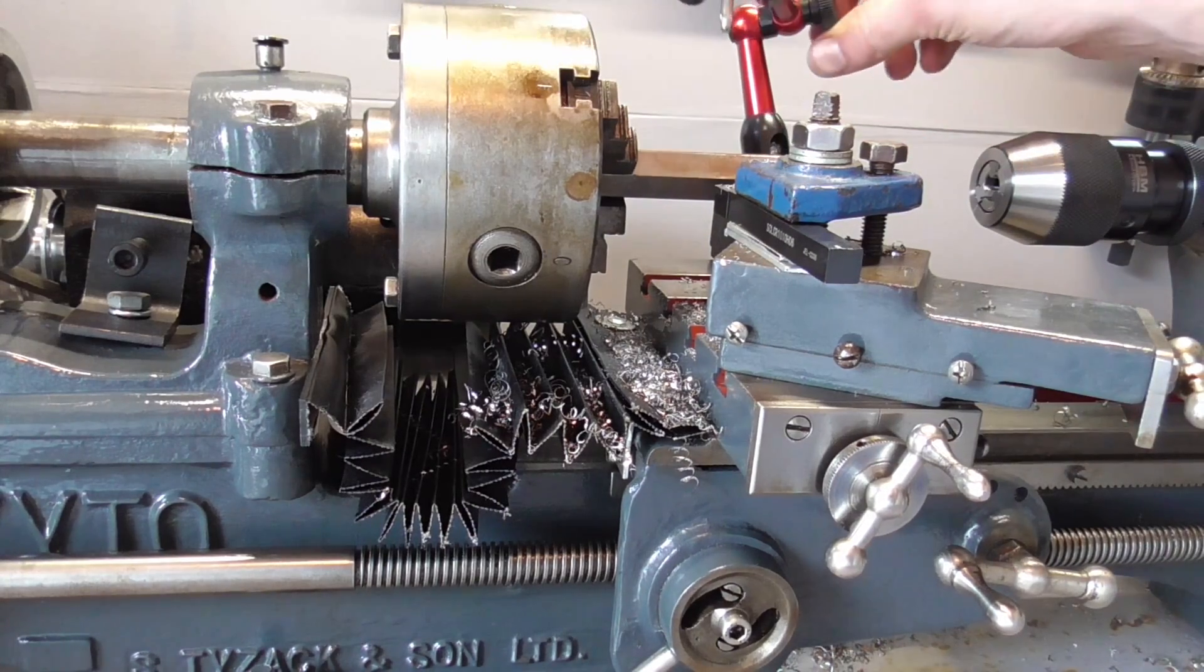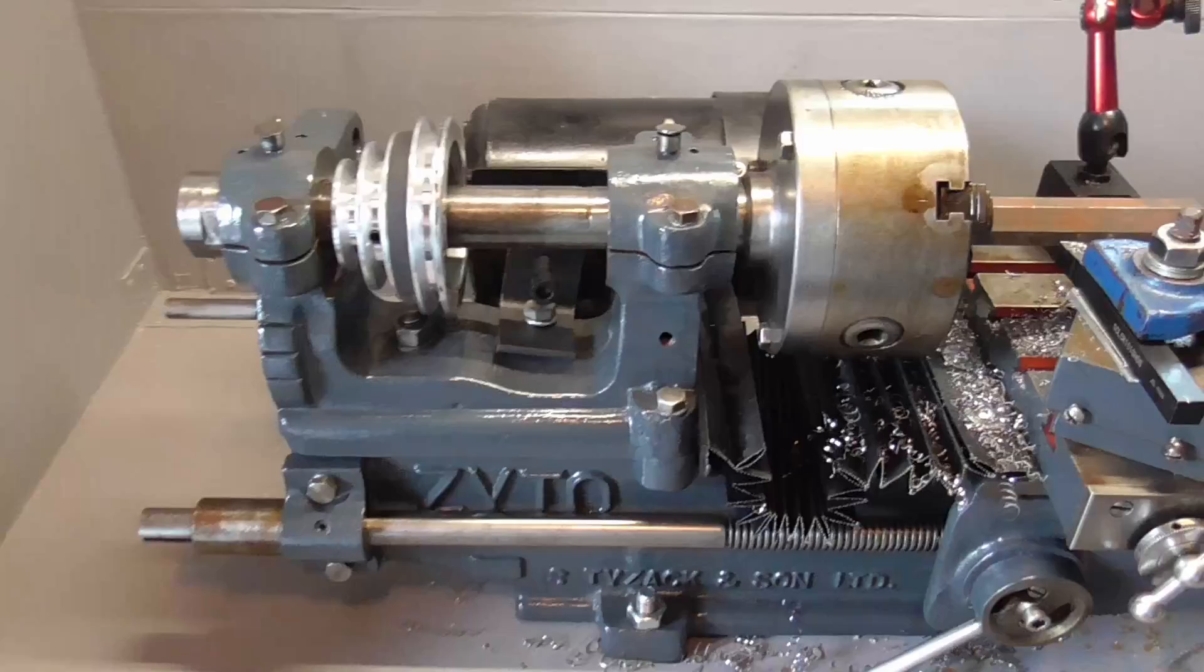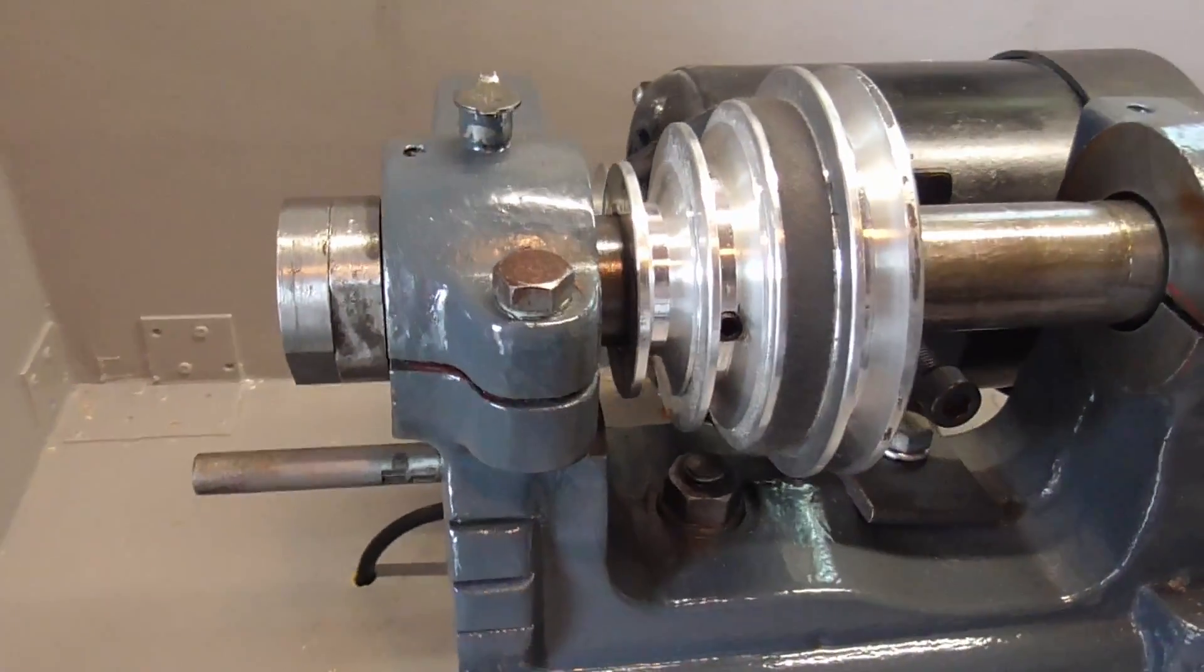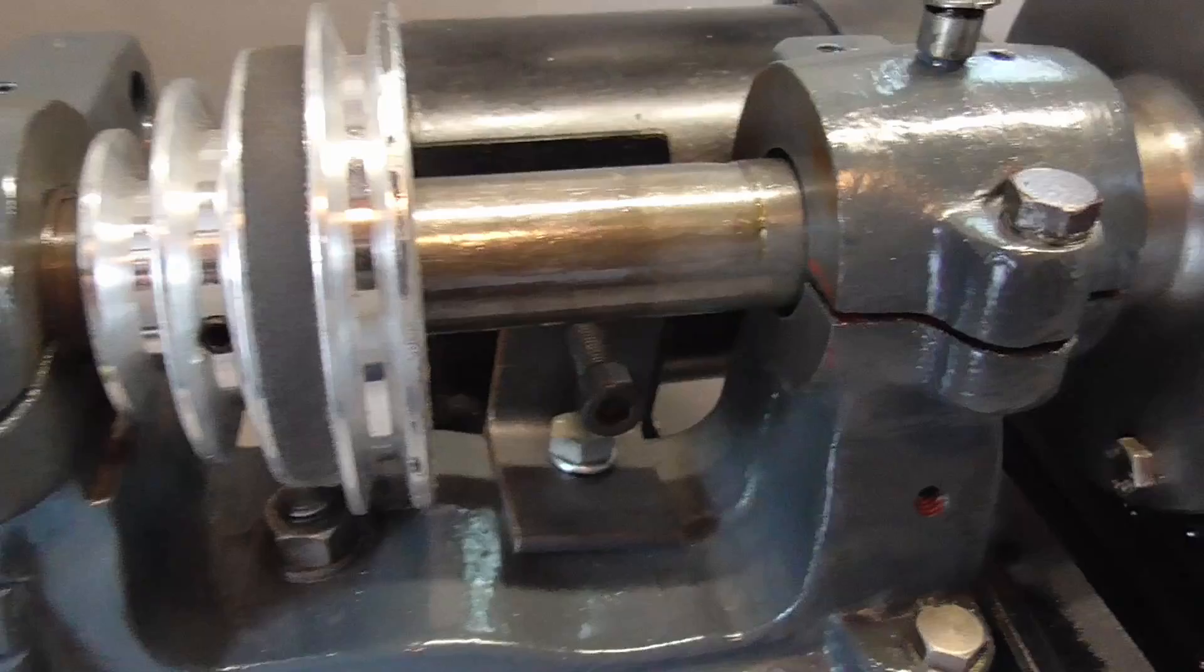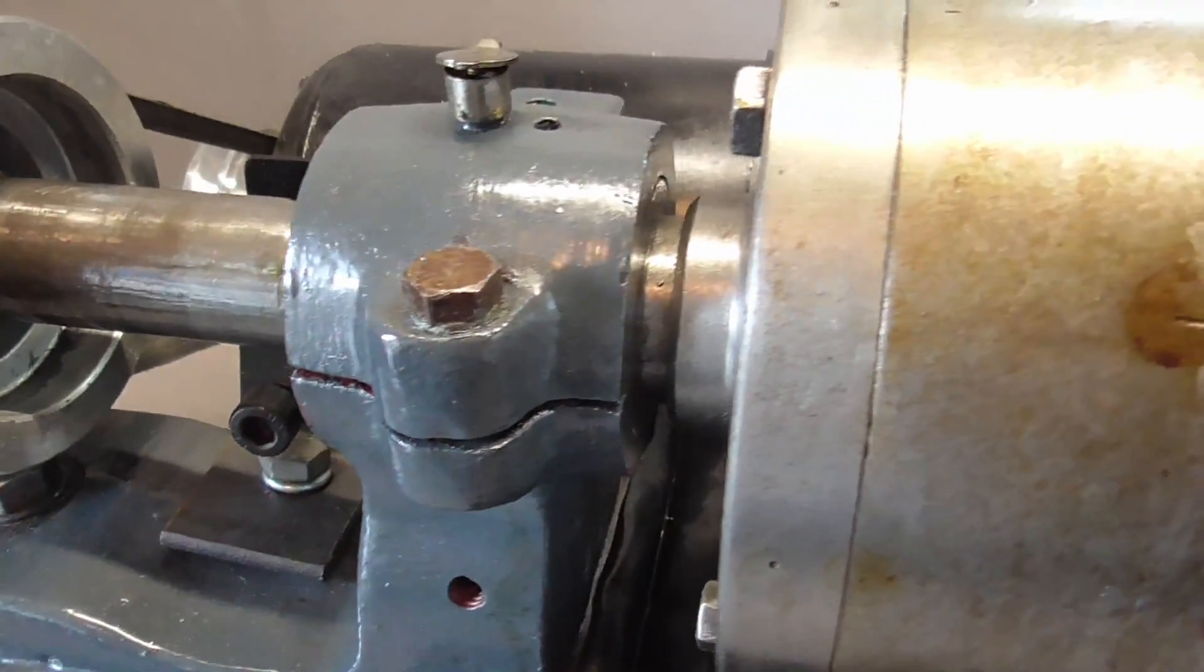I have been thinking about this problem for a bit, and I have found two solutions. One solution is removing the spindle bearing and reinstalling new bushings. Although this would keep the machine correct to the period in which it was produced, I want to choose the second option.